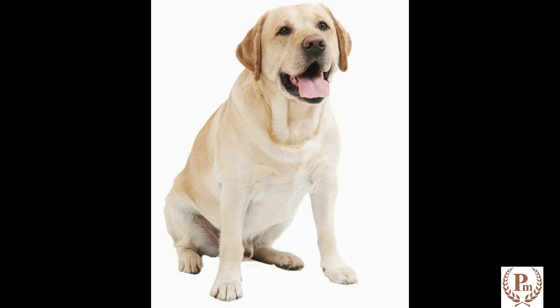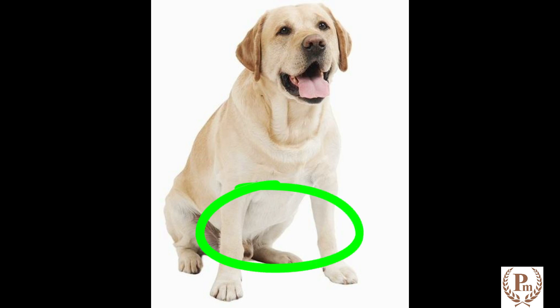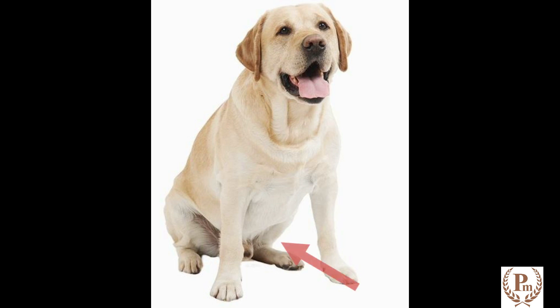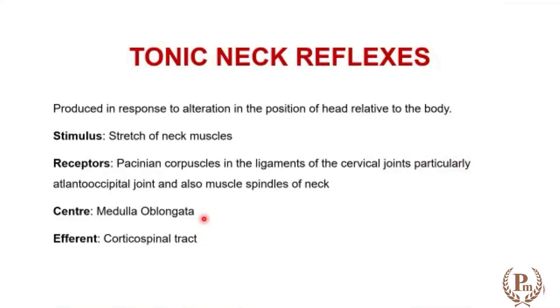An example of this: when a dog sits with its head up, its forelimbs are extended and its hind legs are flexed. This is also an example of tonic neck reflexes. To make this clearer, let us trace the reflex as a reflex pathway and understand its different components.